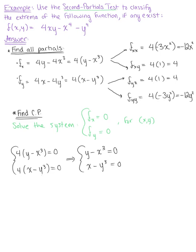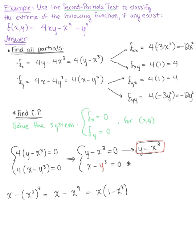To start solving, we'll take the first equation and solve for y, giving us y = x cubed. We substitute this into the second equation, replacing y with x cubed. This becomes x minus (x cubed) cubed, which gives us x minus x to the 9th. Factoring, we have x times (1 minus x to the 8th), set equal to zero.